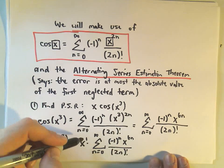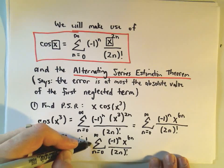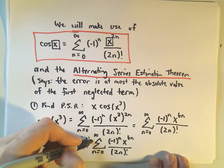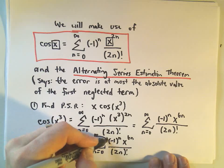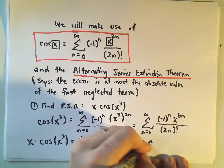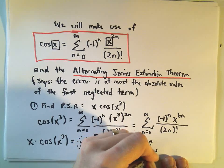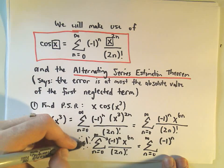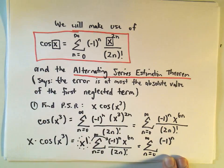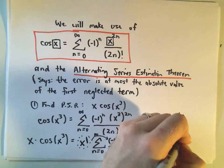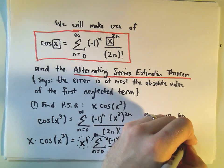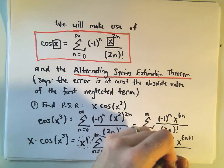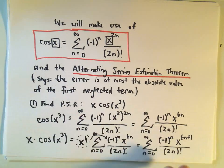There's a rule that says you can basically just multiply through. This is x to the 1st, so we can put that inside the series. If we do that, we get from n equals 0 to infinity of negative 1 to the n. If I have x to the 1st times x to the 6n, like bases, we just add the exponents — so we'll have x to the 6n plus 1, all divided by 2n factorial.